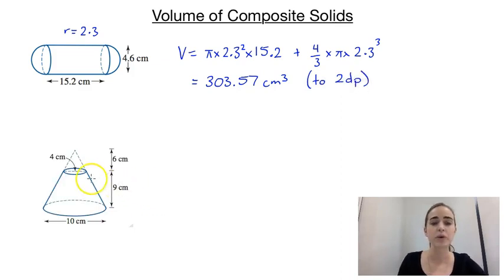For our second example, we need to have a look at how this solid was built. So what it is, it was a whole cone, a whole big cone and then we've cut the top of it off which means we've cut off a small cone on the top. So we're going to find the volume of the whole big cone and then we're going to subtract the volume of the smaller cone.